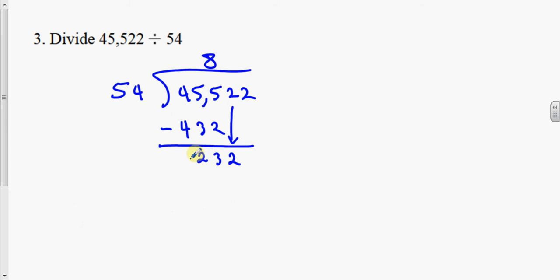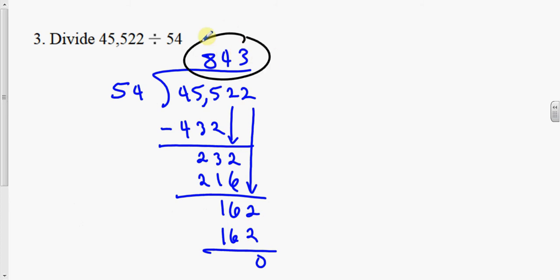Divide 54 into 232. That goes 4 times. 4 times 54 is 216. Draw a line and subtract. 232 minus 216 is 16. Bring down the 2 there. 54 goes into 162 3 times evenly.